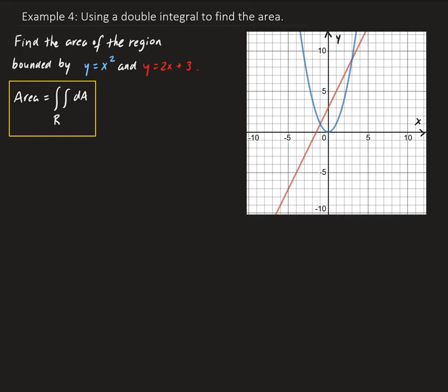In this example, we're going to use a double integral to find the area of the region bounded by y equals x squared and y equals 2x plus 3. Over to the right, we have the graph of x squared in blue, and the graph of y equals 2x plus 3 in red.